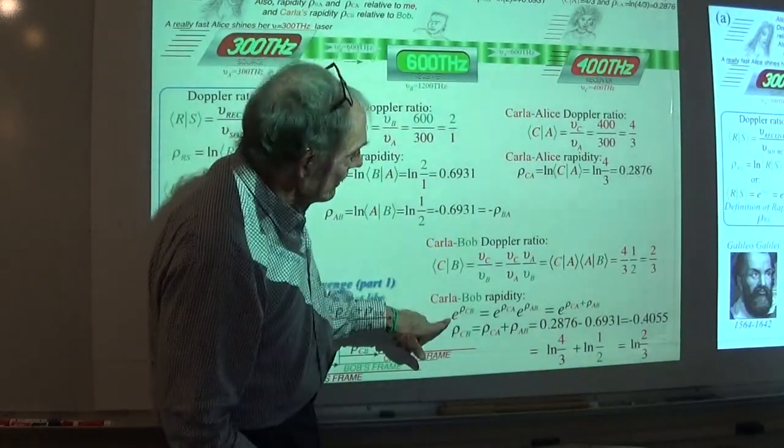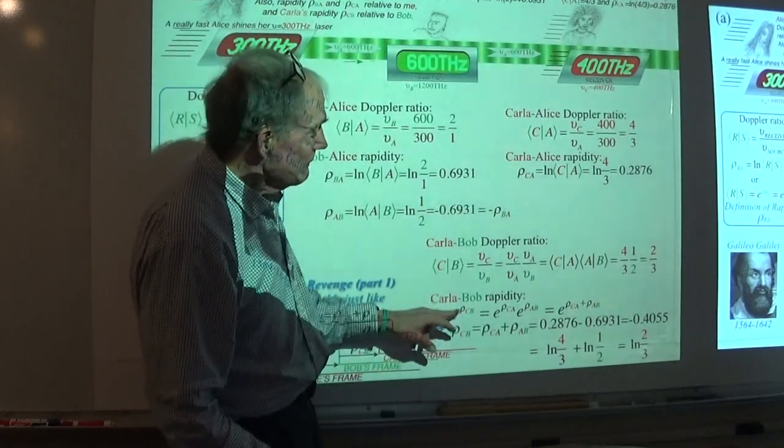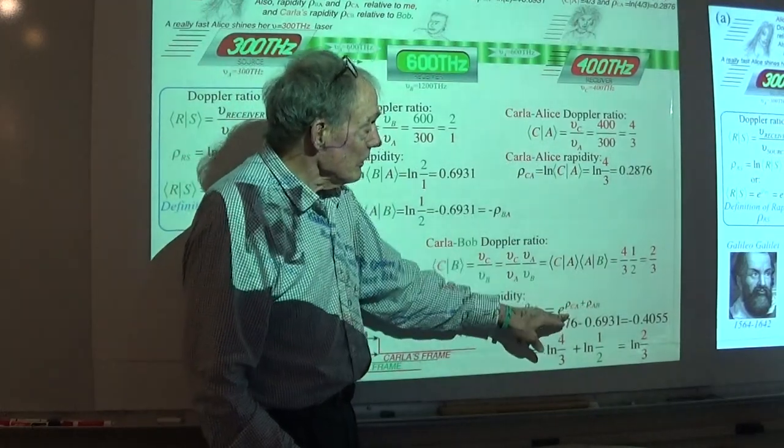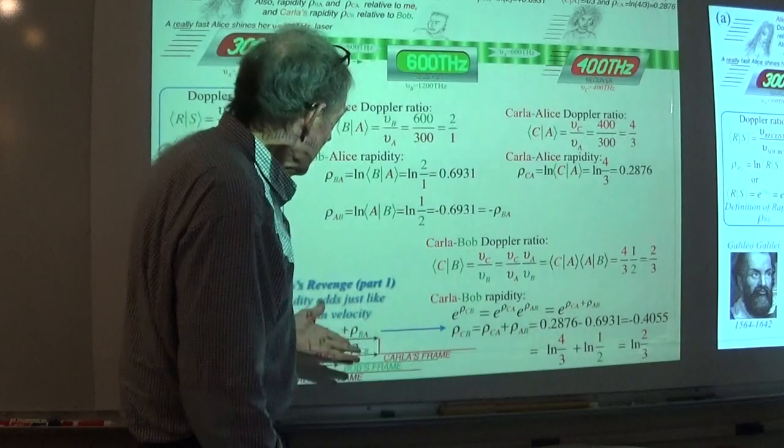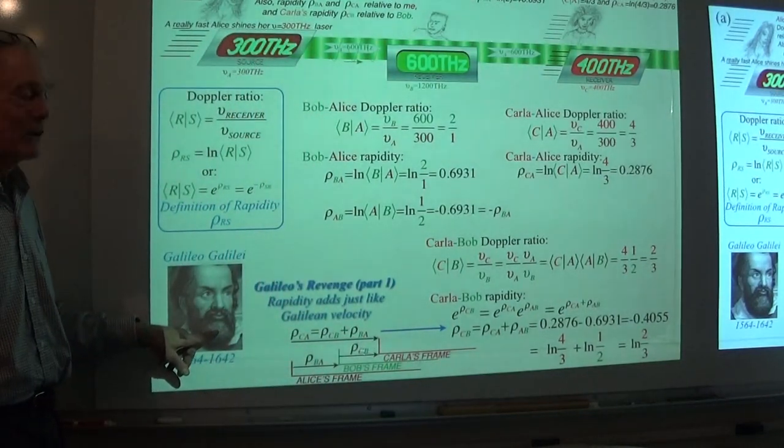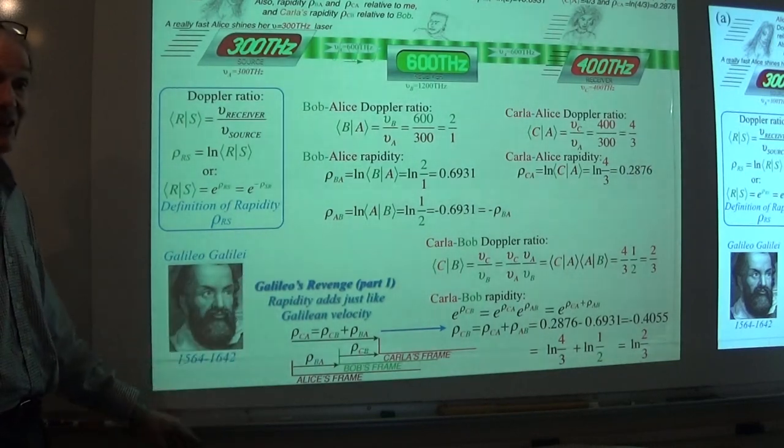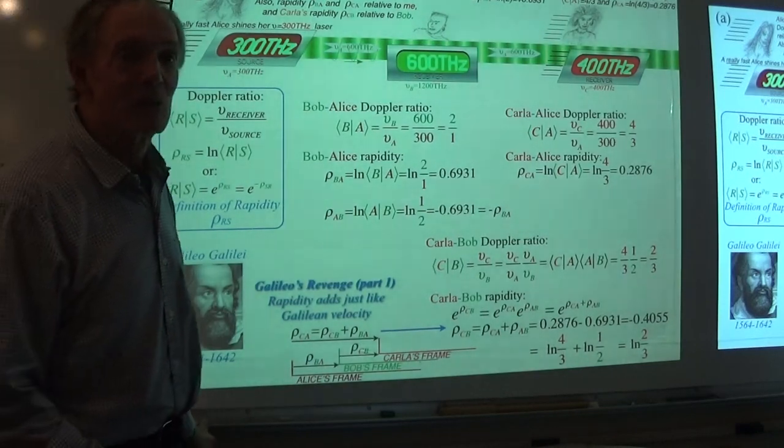So if we put it in an exponent, which is what we do to get the actual Doppler shift. The Doppler shift is given by the exponential of the rapidity. Then there's sum. Bingo. I can, you know, this is the only picture I can find where Galileo is smiling. All the rest of it, he's really grumpy. But here, he's had his revenge. He was right all along. He just meant rapidity.